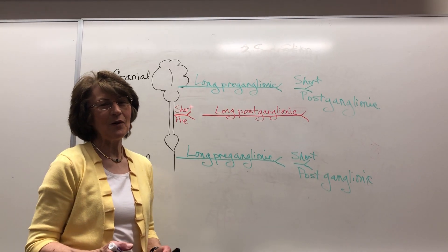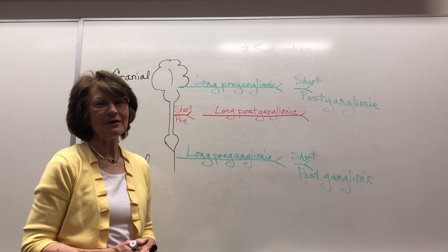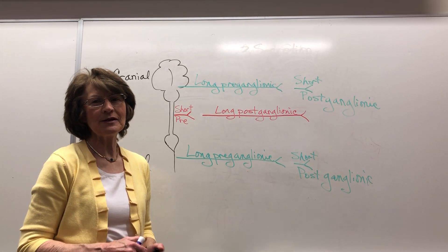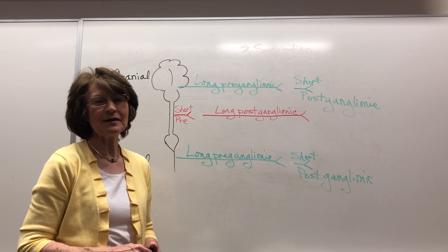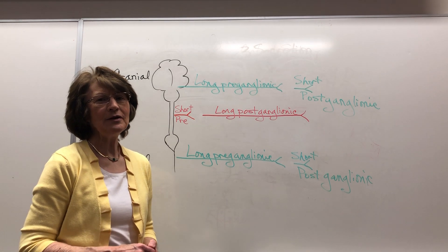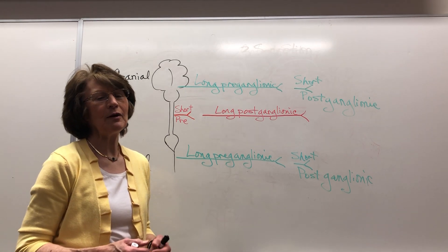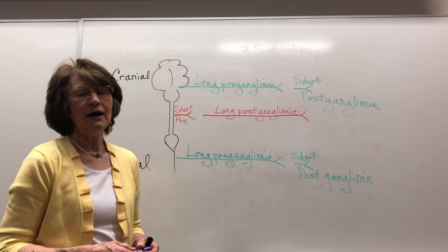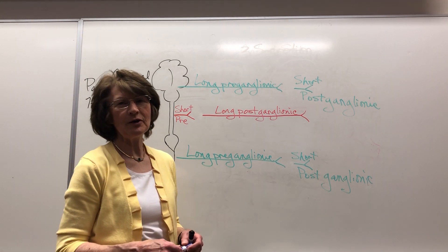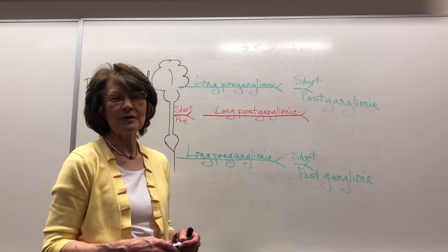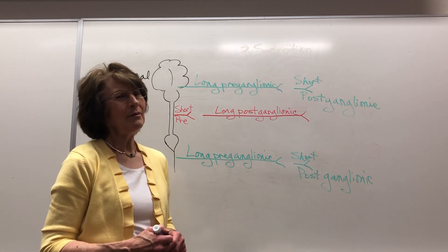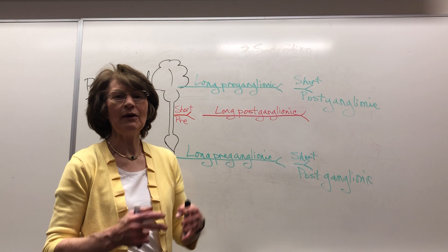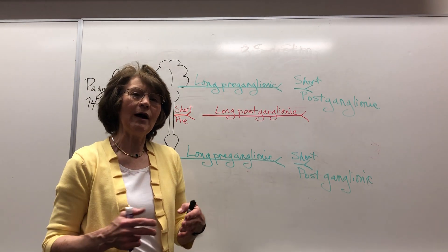This is page 74 in the lecture manual. It's the sympathetic and parasympathetic nervous system. I want to go over that so you can see it. It's well done in the textbook, and you can see it in your notes. Let's look at it for a moment.